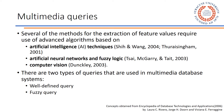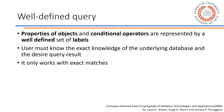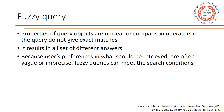There are two types of queries used in multimedia database systems. The first is the well-defined query, where properties of objects are represented by a well-defined set of labels and conditional operators are also well-defined. The user must know the exact knowledge of the underlying database and the desired query result, and this query only works with exact matches. The second is the fuzzy query, where properties of query objects are unclear and comparison operators do not get exact matches, resulting in a set of different answers. Because user preferences are often vague or imprecise, fuzzy queries can meet the search conditions.